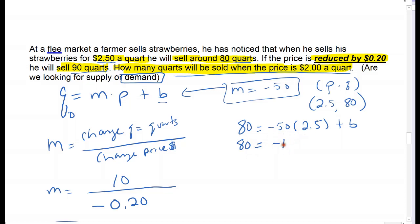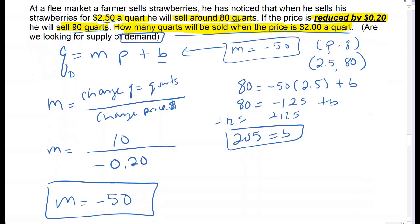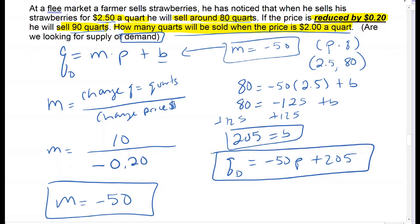Negative 50 times 2.5 comes out to negative 125. So 80 equals negative 125 plus B, giving B equals 205 as my y-intercept. My quantity demanded equals negative 50 times price plus 205. That's not the final answer though—I need that equation to answer the question: how many quarts will be demanded if the price is reduced to $2?